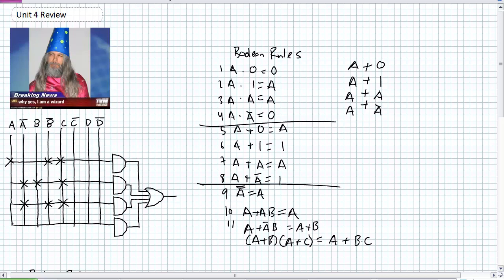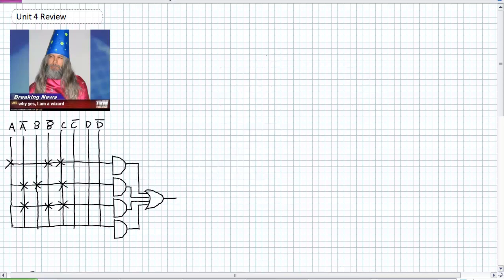Let's go ahead and just do an example problem of some Boolean simplification. Looks like I've got a PLD device. I've got a PLD device with a combination of inputs on it. Go ahead and see if you can get the expression, see if you can get potential simplification of that.